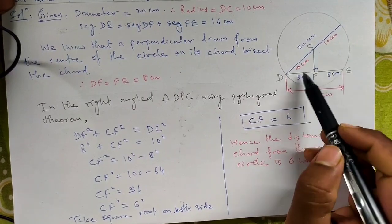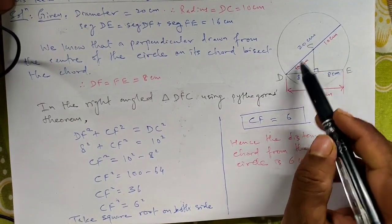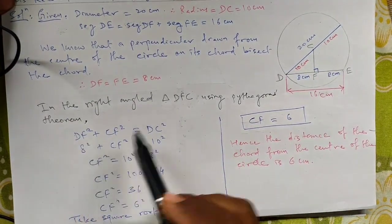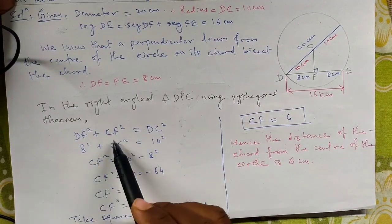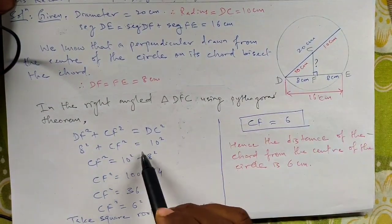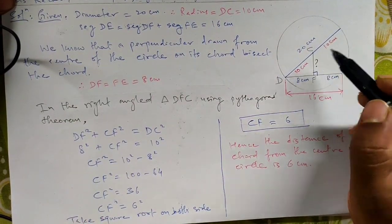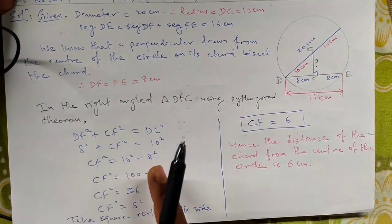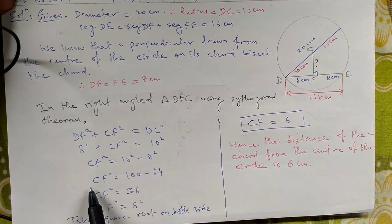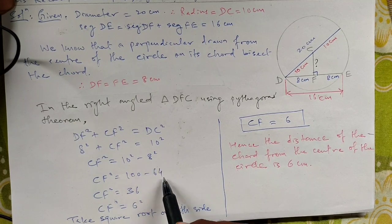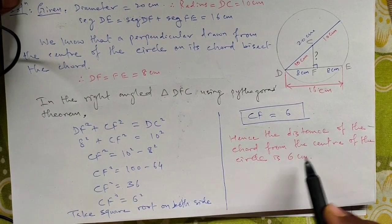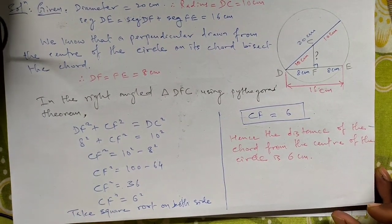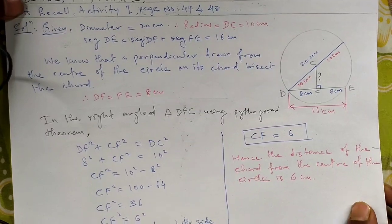Using Pythagoras theorem: the sum of squares of two sides of a right angle triangle equals the square of the hypotenuse. So DF squared plus CF squared equals DC squared. DF is 8 cm and DC (the radius) is 10 cm. Therefore CF squared equals 10 squared minus 8 squared, which gives 100 minus 64 equals 36. CF squared equals 6 squared, so CF equals 6 centimeters. The distance of the chord from the center of the circle is 6 centimeters.